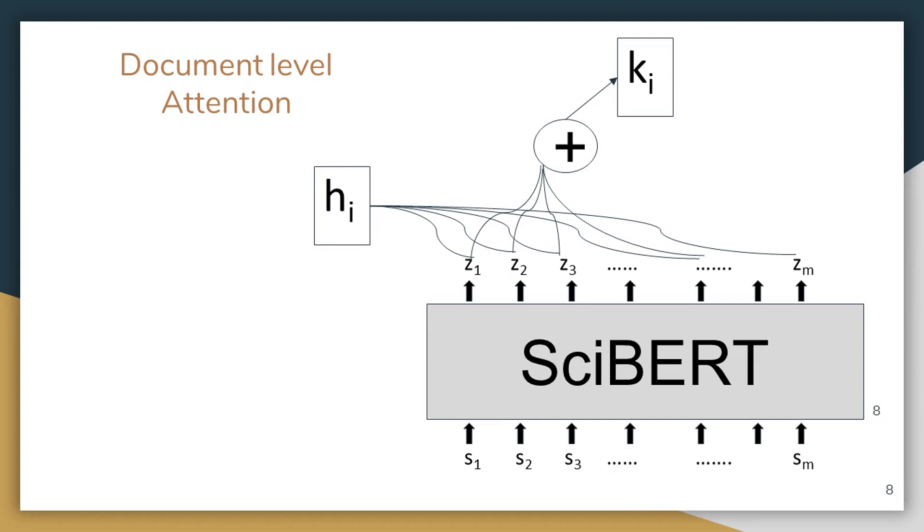For example, we have used SciBERT in this to obtain sentence level representations of z1 to zm. We use these sentence level representations to enrich the representation of the word h_i and we obtain k_i. For the math, you can refer to our paper. I am skipping the math for time being. So after obtaining k_i from this layer, there is a downside.